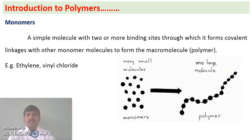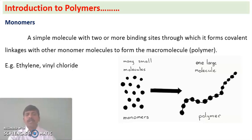Monomers are the simple molecules which give rise to polymers, but monomers should have at least two binding sites to give rise to a polymer. They may have two, three, or more binding sites. Small molecules having two or more binding sites are called monomers. Examples are ethylene, which gives rise to polythene, and vinyl chloride.